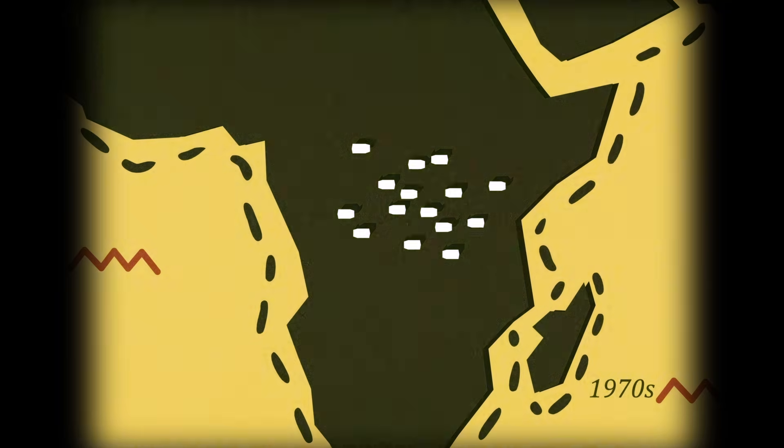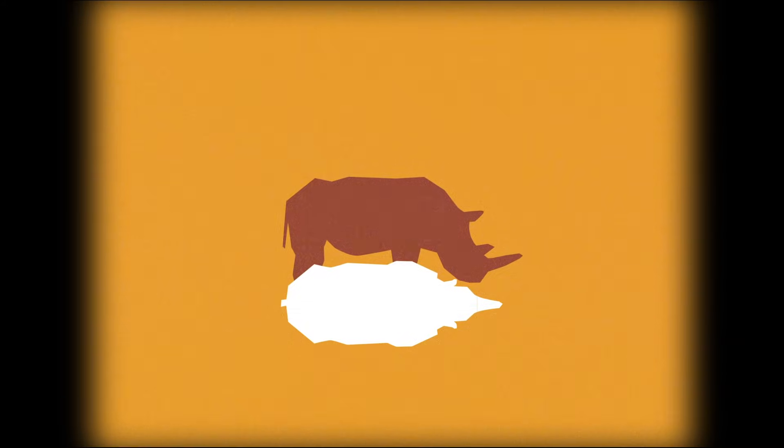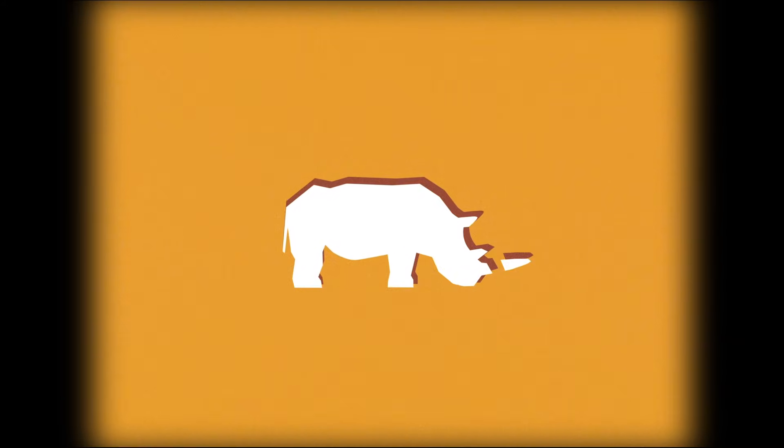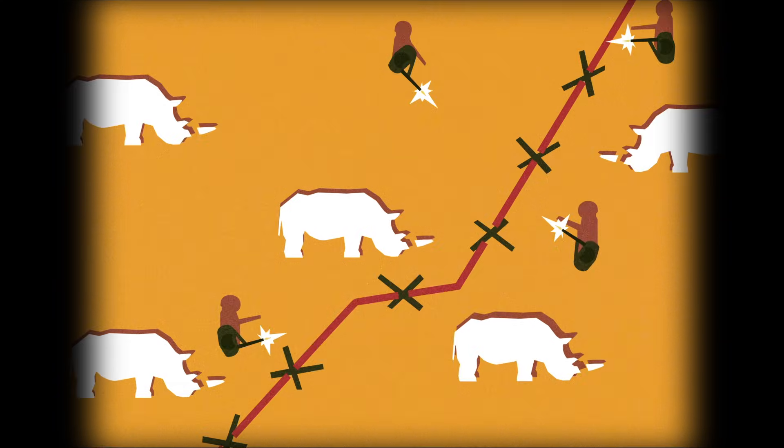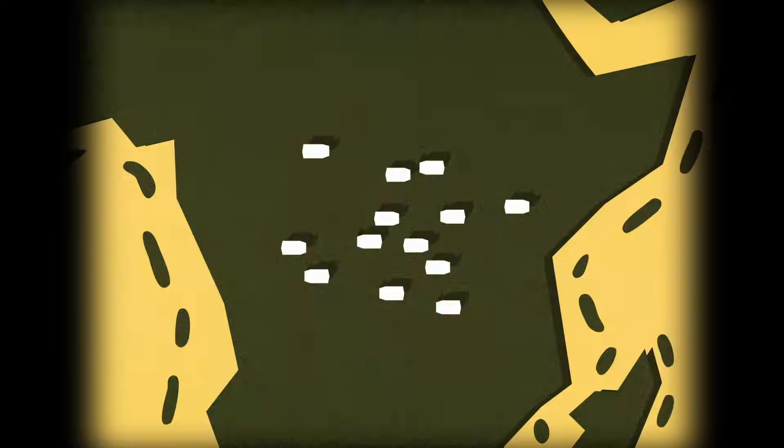The story starts about 50 years ago, when poachers began illegally hunting thousands of rhinos across Africa for their horns. This, combined with civil wars in their territory, decimated northern white rhino populations.